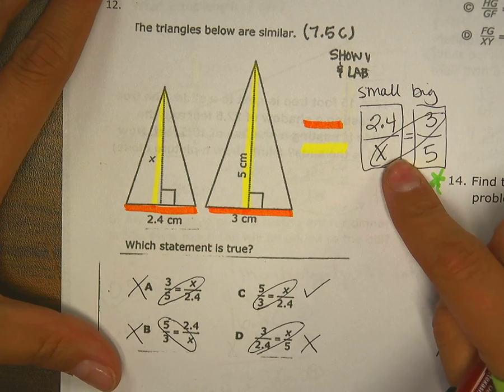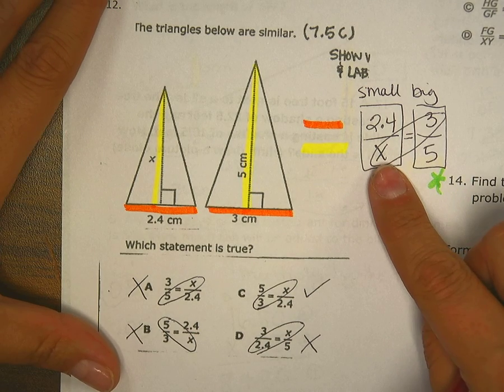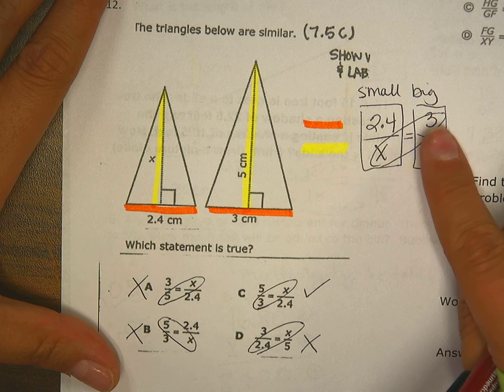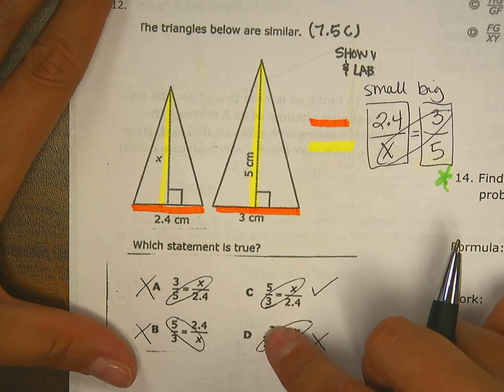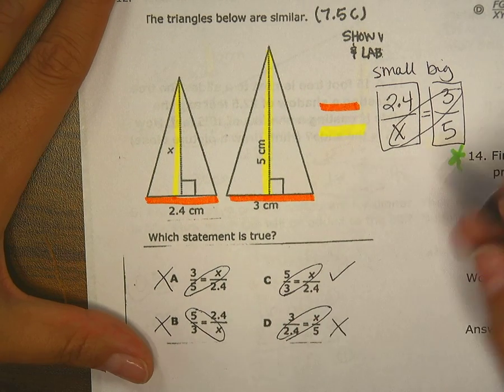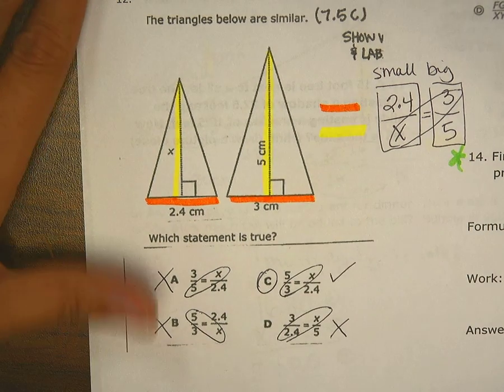So if you use the strategy of first setting it up the way that you would set it up, and then always look to see if mine has 3 and x on the diagonal, your other answer choices that work also have to have the same thing. So answer C is for number 12.